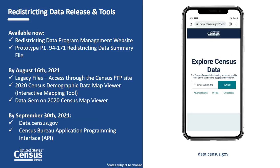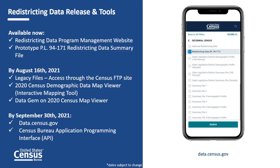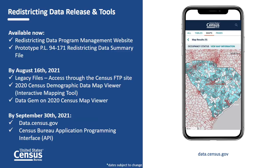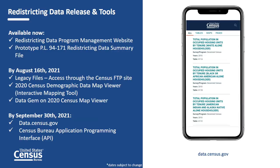By September 30th, we will provide the states and the public with the same data in data.census.gov, our centralized place to view data. Different from the File Transfer Protocol, or FTP, data available in data.census.gov will demonstrate data in a table and map format for viewing and downloading, where the FTP demonstrates data in a file format. More data topics will be periodically released on data.census.gov.